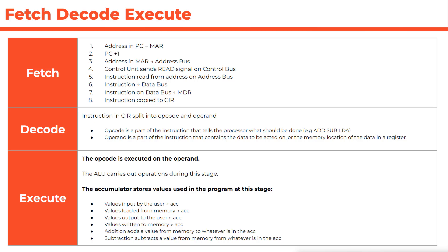Once in the current instruction register, the decode phase begins. The CIR is split into an opcode and an operand. The opcode is the part of the binary instruction that tells the processor what should be done — a command such as addition, subtraction, load, store, halt, or branch. The operand is the part that contains the data to be acted on, or the memory location of that data. Opcodes act on the operand — we do the action to the data.